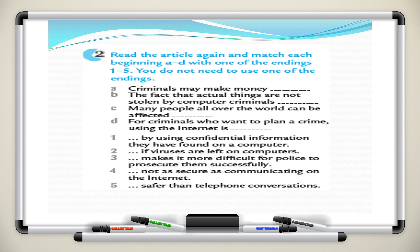Question number two says: read the article again and match each beginning with one of the endings. You have beginnings A, B, C, and D, and endings from one to five. A: criminals may make money by using confidential information they have found on a computer. B: the fact that actual things are not stolen by computer criminals makes it more difficult for police to prosecute them successfully. C: many people all over the world can be affected if viruses are left on computers. D: for criminals who want to plan a crime, using the internet is safer than telephone conversations.